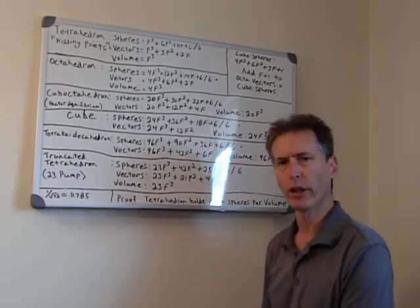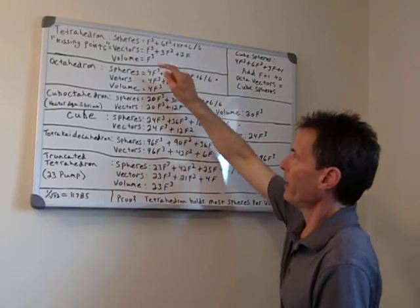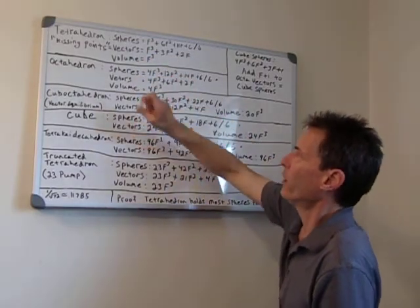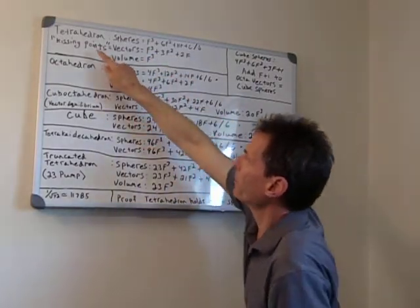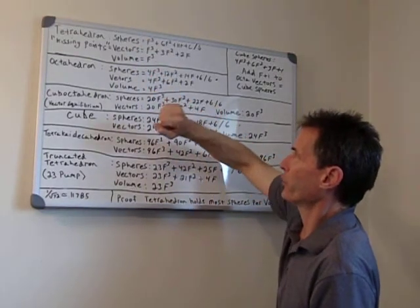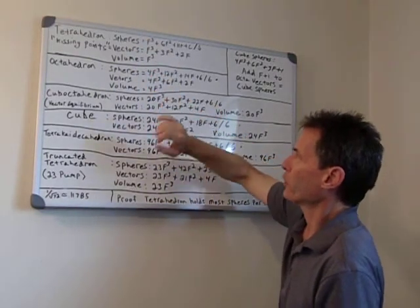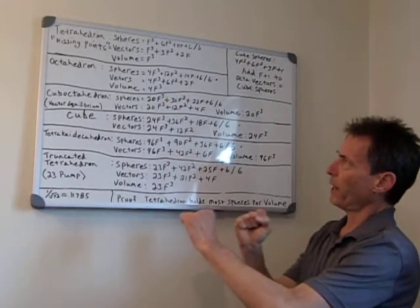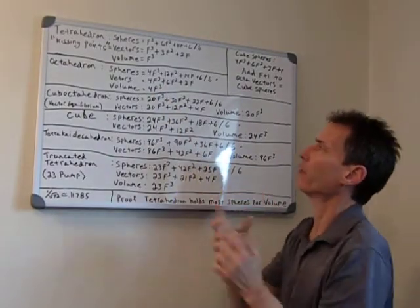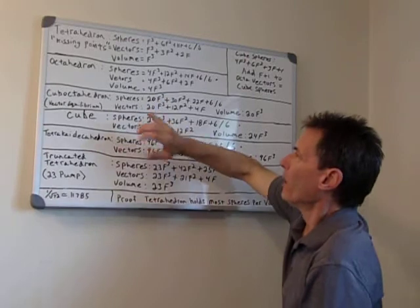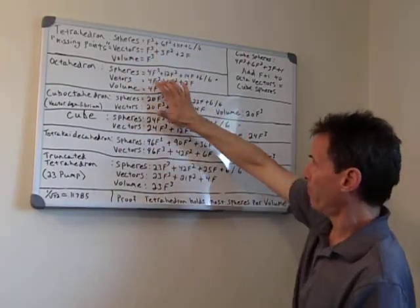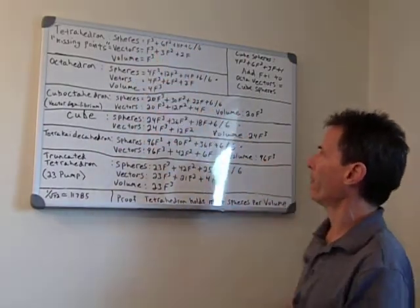To the best of my knowledge, mankind does not yet have the vector formulas. The vector formulas are the kissing points between the spheres — that's where a sphere would transfer its energy. That's also where a vector's magnitude of force would be holding those spheres together. These vector formulas, I'm pretty sure, are brand new to mankind's mind.